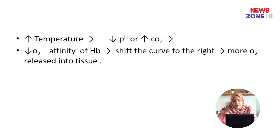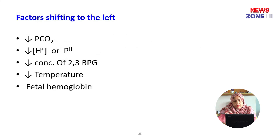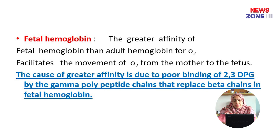Another factor shifting the curve to the right is increased temperature. So increased temperature, decreased pH or increased carbon dioxide decreases affinity of hemoglobin and shifts the curve to the right, releasing more oxygen into the tissue. Factors shifting the curve to the left include decreased partial pressure of carbon dioxide, decreased hydrogen ion (increased pH), decreased 2,3-DPG, decreased temperature, and fetal hemoglobin. Fetal hemoglobin has greater affinity for oxygen than adult hemoglobin, facilitating the movement of oxygen from mother to fetus. This is due to poor binding of 2,3-DPG by the gamma polypeptide chain that replaces the beta chain in fetal hemoglobin.